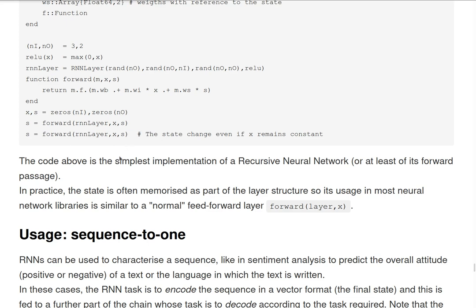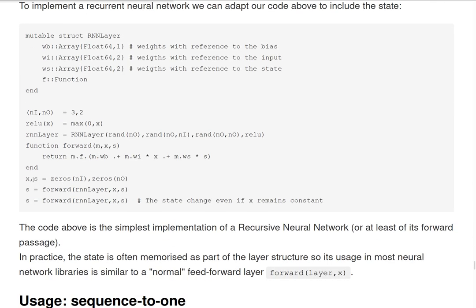So this is the simplest possible implementation of a recursive neural network, and here we keep explicitly the state as an element outside of the structure. So we need to call forward with both the X and the state. What most libraries of neural networks will do is include the state as here as an element of the structure. So when you have to call forward, you don't need to include the state because the state is somehow included in the object defining the layer.